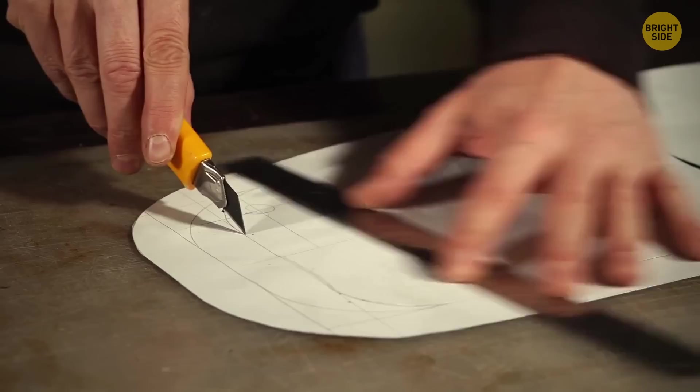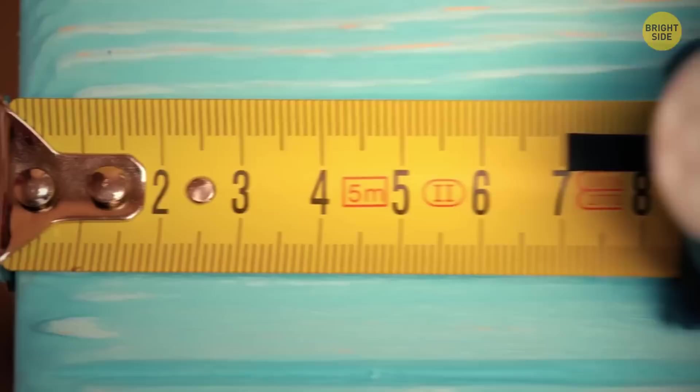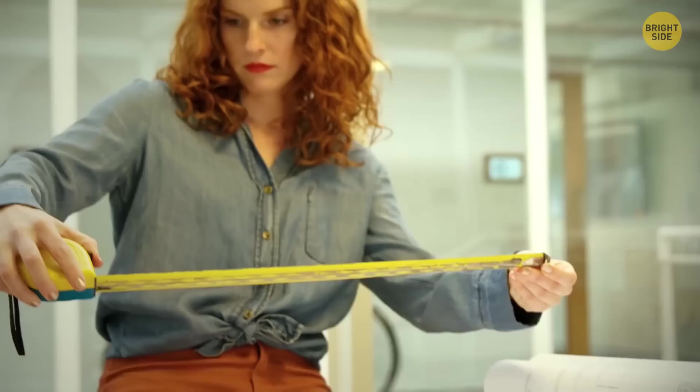When it comes to measuring tape, almost every reel has an empty slot in the metallic end. This is called a nail grab, so you can attach it to a nail or screw. A handy trick to do measurements without requiring someone else to hold it in place. Ooh, very nifty.